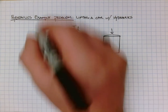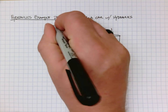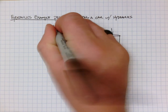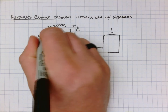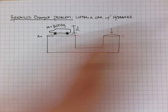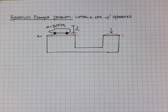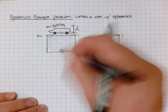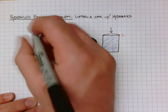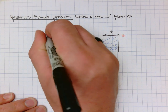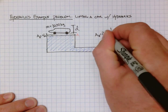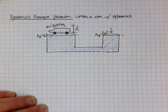Let's give this scenario some information. We'll give the mass of the car, and we'll call this position A and this position B. There is an incompressible fluid connected between the two positions. The area at A is equal to four meters squared, and the area at B will be half of that — two meters squared.